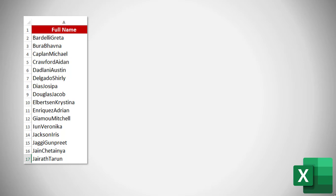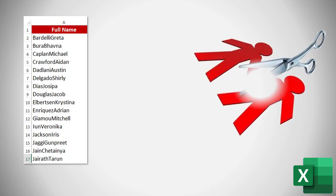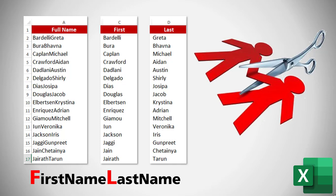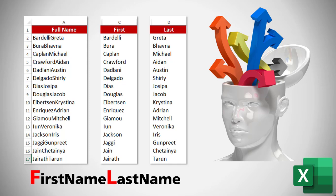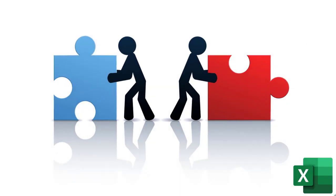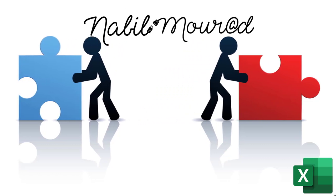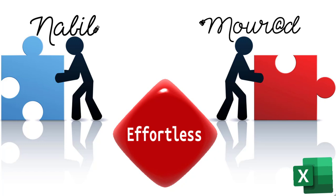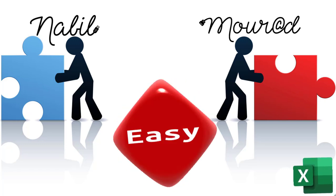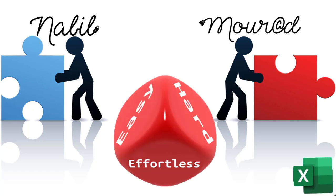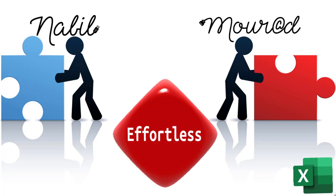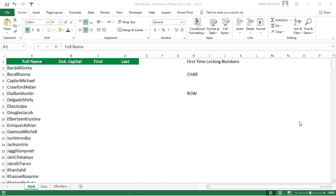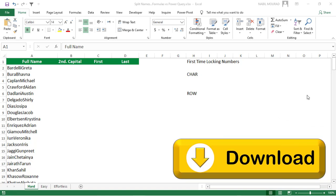If you have a string of text like a full name without spaces and you want to split it into two columns — one for the first name and another for the last name — you look for a pattern like the change in letter case. Excel gives us different options to perform the same task. I am Nabil Murad, and in this tutorial I show you how to split text at the second uppercase character. I'll be using three methods I call hard, easy, and effortless.